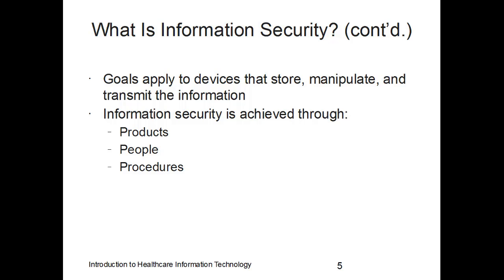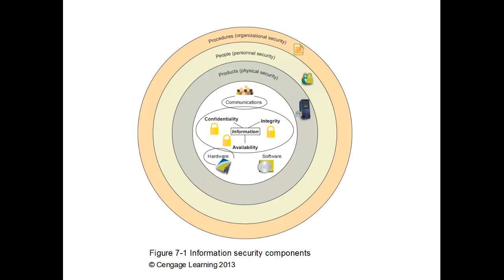These goals apply to devices that store, manipulate, and transmit information about the patient. Information security is achieved through various products, people, and procedures. In this image we have the information security components — integrity, confidentiality, and availability of the information, along with various hardware, software, and communications. The first layer of security is physical security.